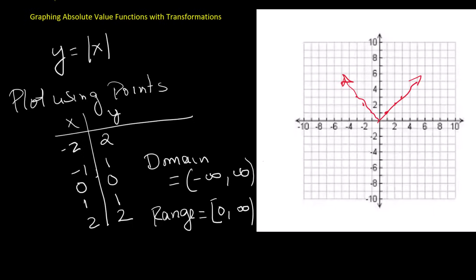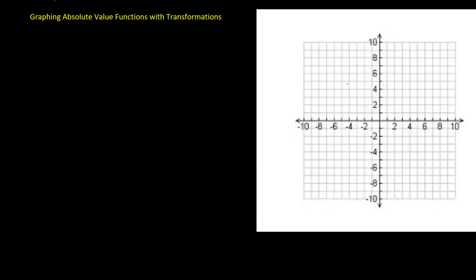Now let's see what happens when we place a negative sign in front of the absolute value. The function is f of x equals negative absolute value of x. The graph is still shaped like a letter V with its sharp point at the origin, but this time it opens downward instead of upward. That's because the negative sign reflects the graph across the x-axis.